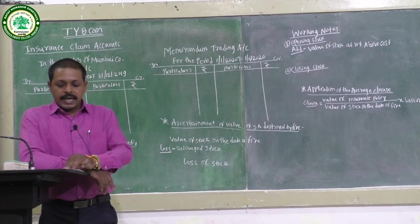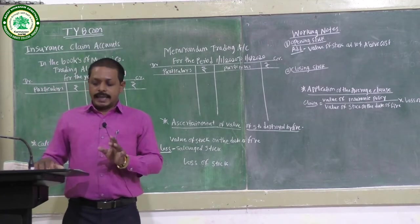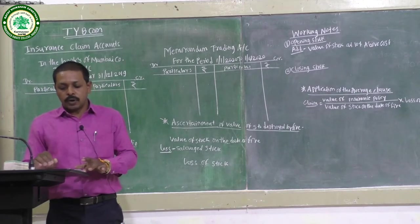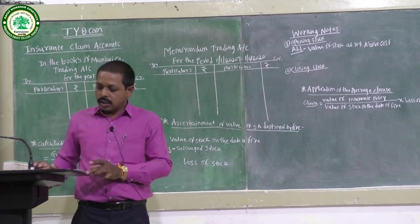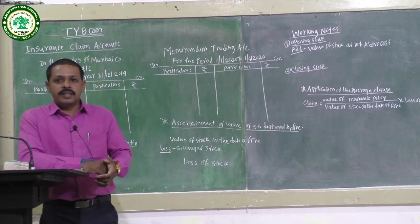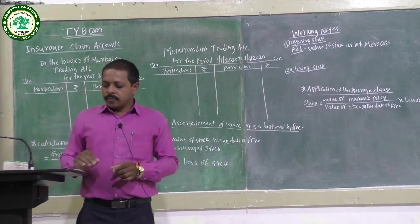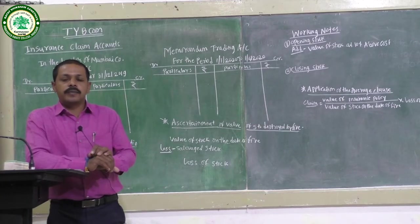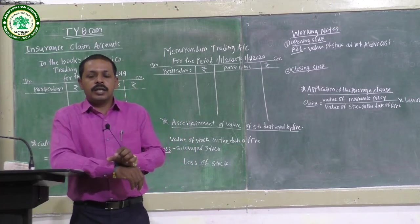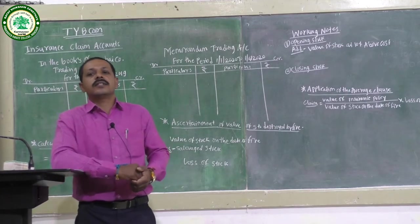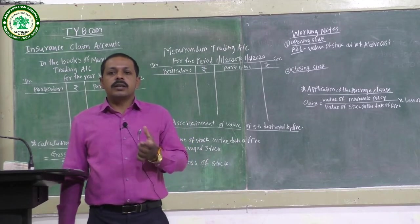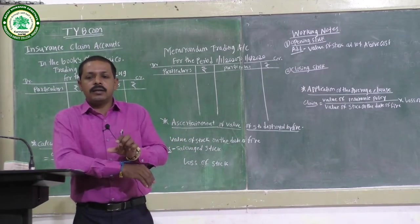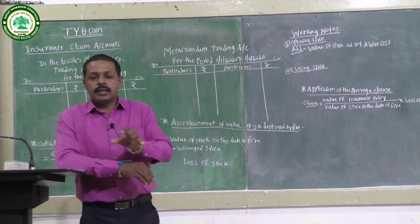It was the practice of the company to value stock at 10 percent above cost. The salvage stock was valued at cost Rs.4,000. The insurance policy amount was Rs.21,000 and there was an average clause in the policy. We need to calculate the amount of claim to be presented to the insurance company for loss of stock for Mumbai Company.